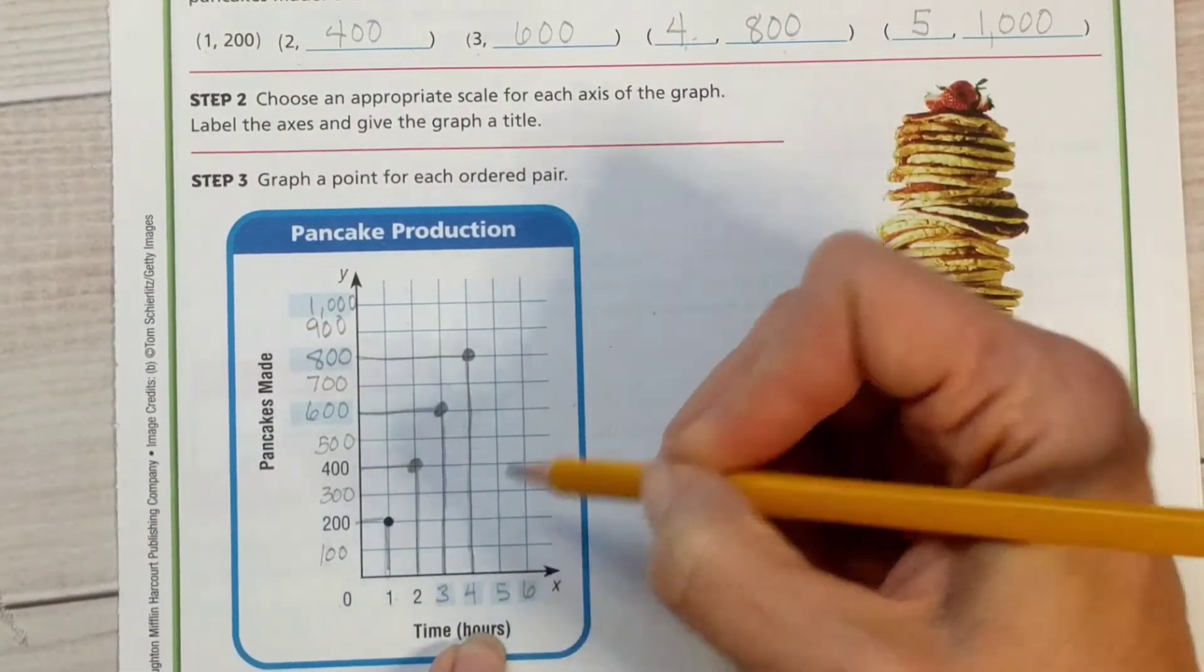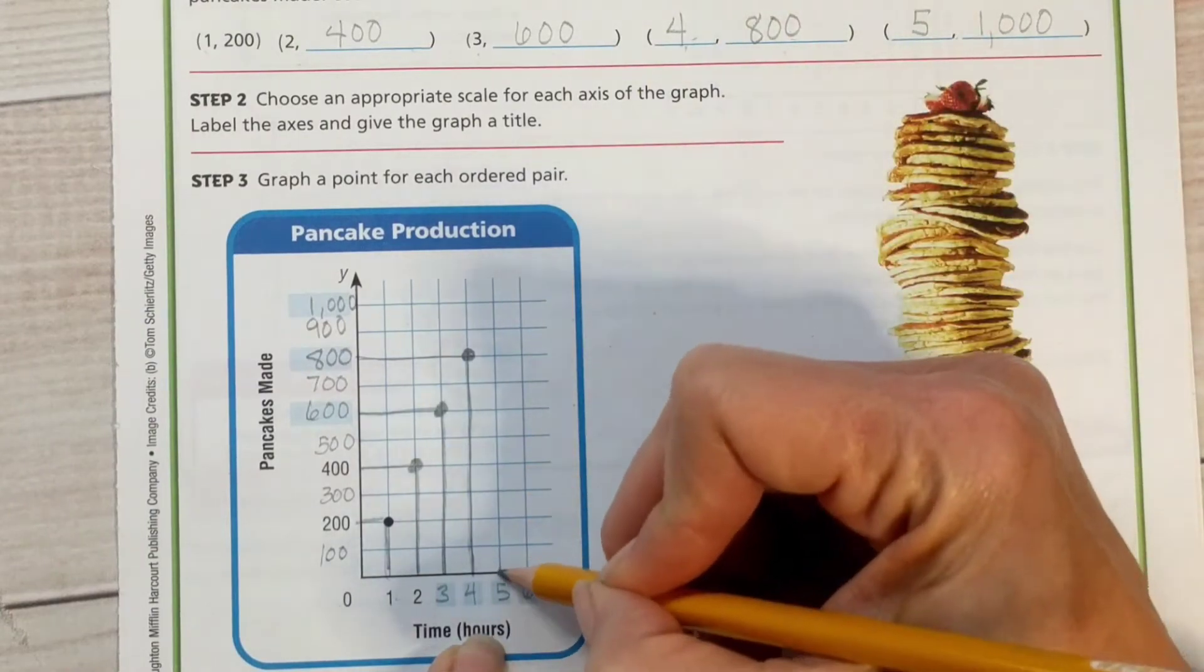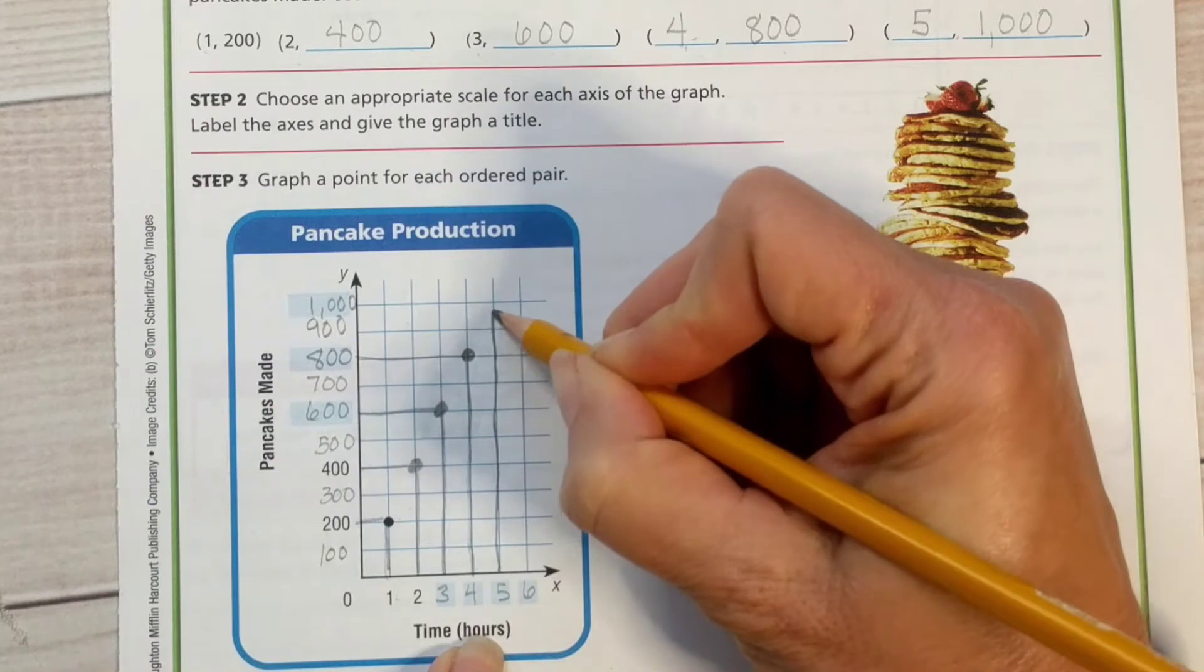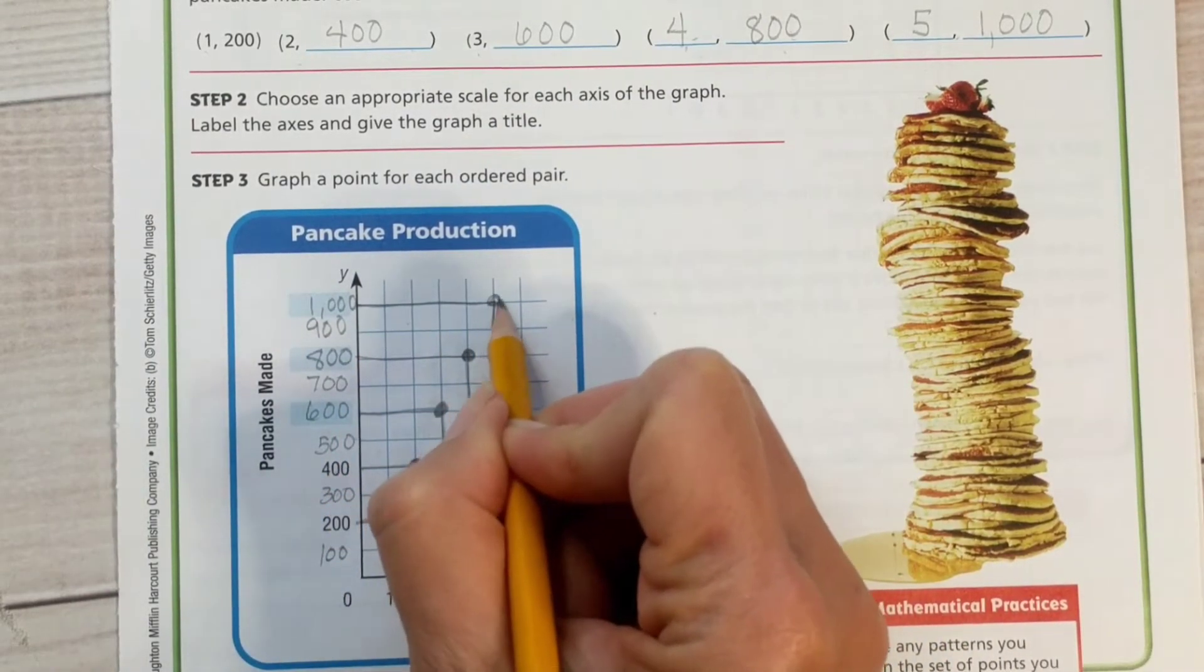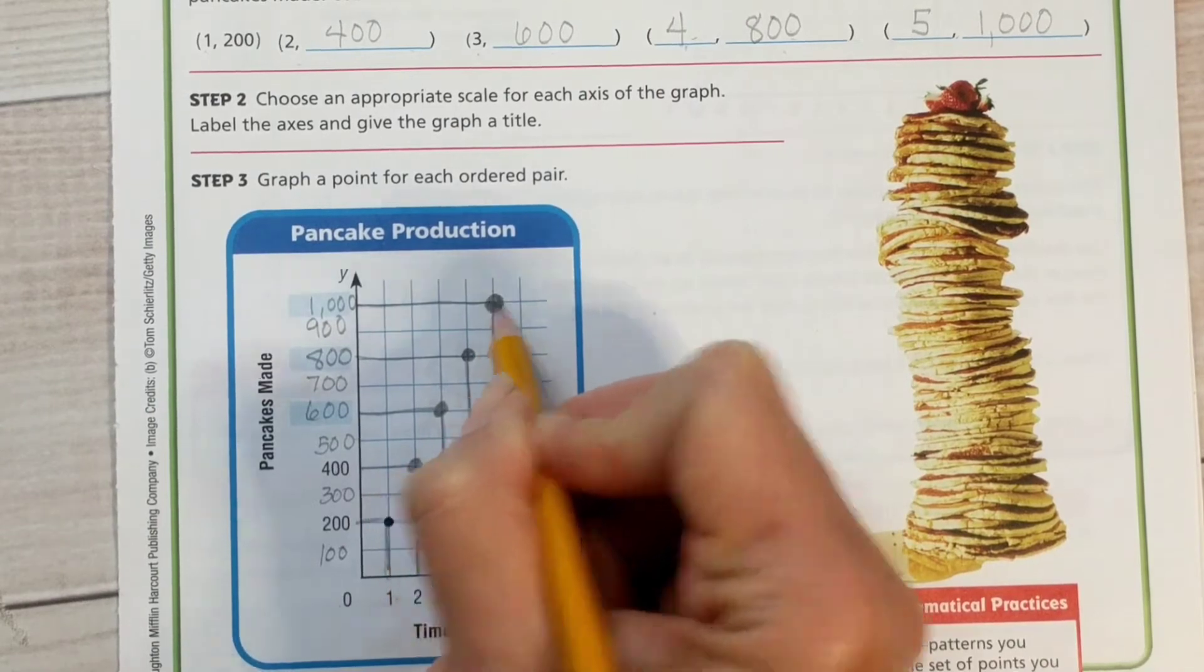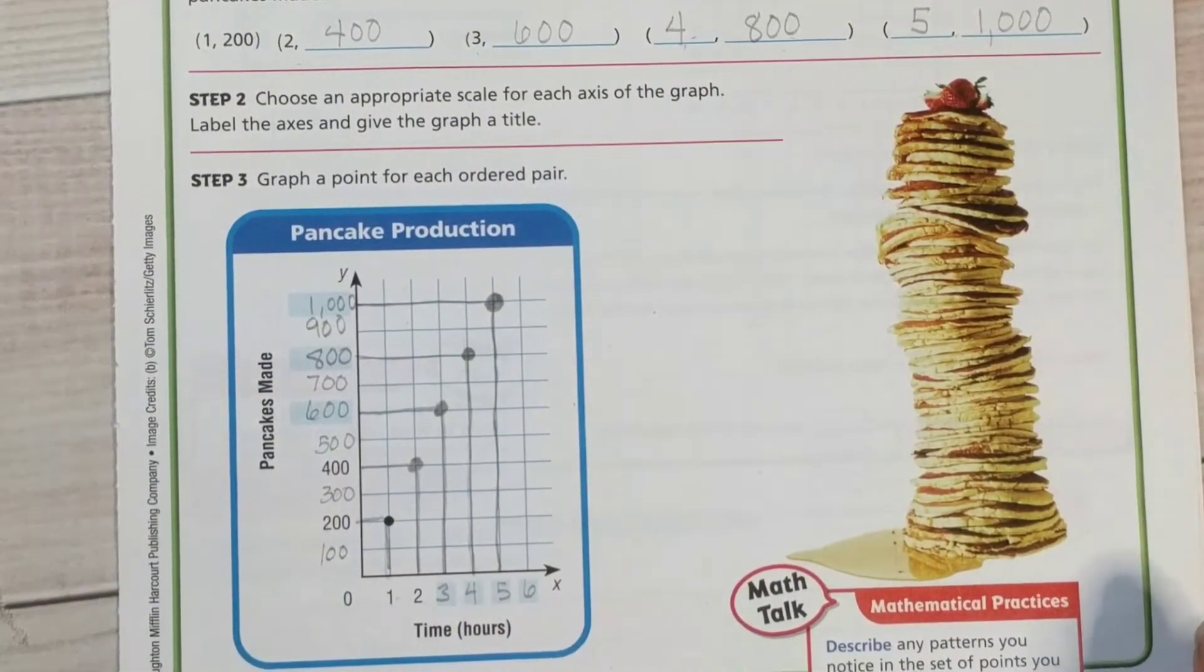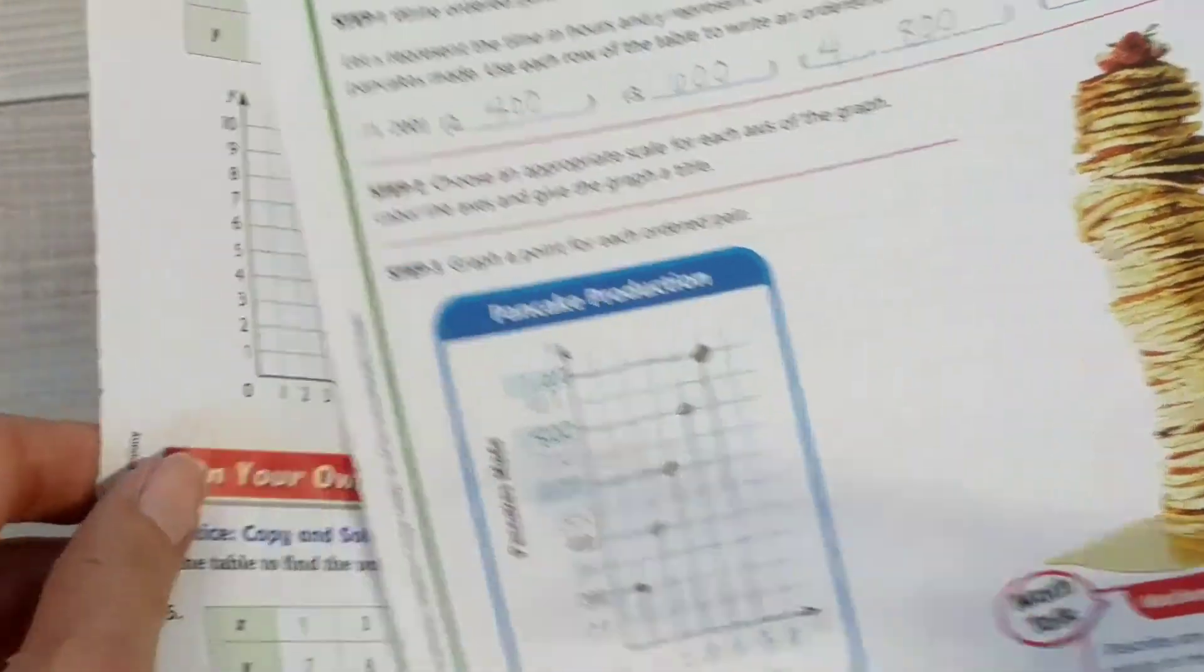We're going to do this one last time with the 5. We're going to start at 5, and our ordered pair is 5, 1,000. So we're going to go up from the 5 all the way up to the 1,000. From the 1,000 we're going to come across to the 5. And there's our point. And we have now graphed our ordered pairs. Nicely done. Alright, let's take a look at the next page.